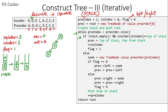In the next iteration, the top of the stack is A and the in-order index points to P — not equal, so we go to the else part. We create a new node with value L (the third index of the pre-order traversal). Flag is 1, so we go to the else part: right of D points to L. Previous becomes L and flag becomes 0. We push L to the stack and increment pre-index to 4.